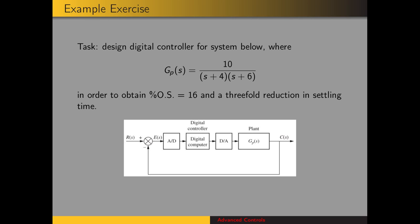Here's the example exercise we'll work with. For the system shown here, we have a digital controller and a plant. The plant transfer function is 10 over (S+4)(S+6). We want to design a controller such that we get 16% overshoot and a 3-fold reduction in settling time. Those are our design parameters.